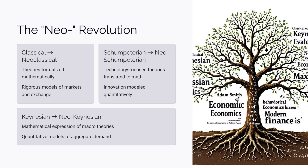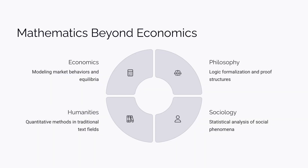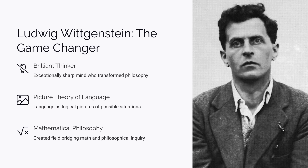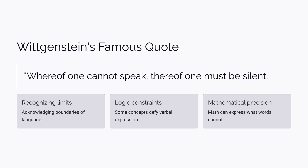Similarly, the Schumpeterian school, which focuses more on technology than mainstream economics, is now called the neo-Schumpeterian school. The 'neo-' prefix indicates that the logic is developed primarily through mathematics rather than words. Interestingly, even in philosophy and the humanities, where logic is traditionally expressed through words, mathematics is increasingly being used. This trend was largely influenced by a brilliant thinker, Ludwig Wittgenstein, who developed the picture theory of language. One of his famous ideas is: 'Whereof one cannot speak, thereof one must be silent.'